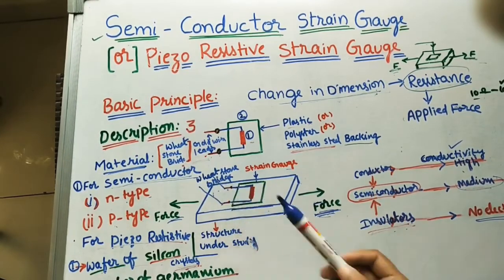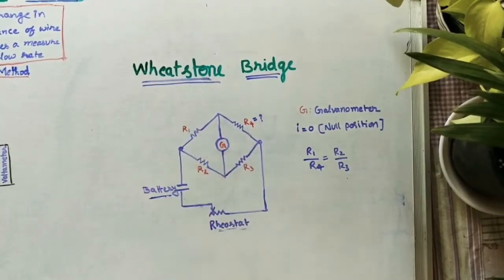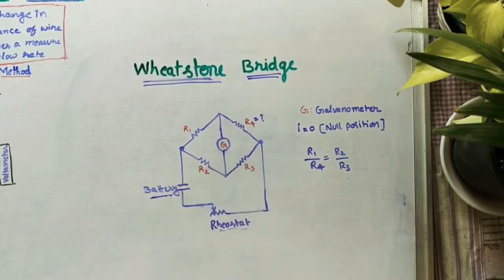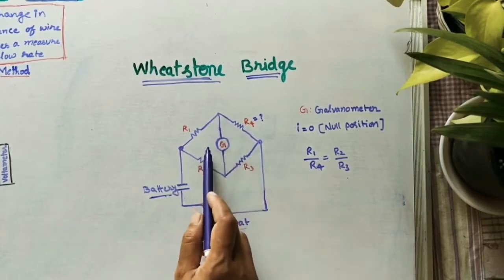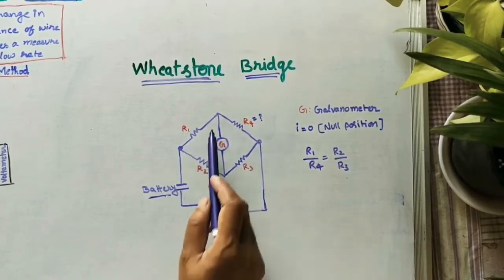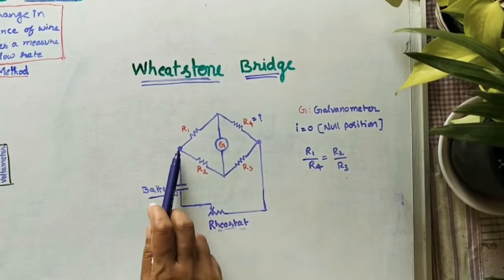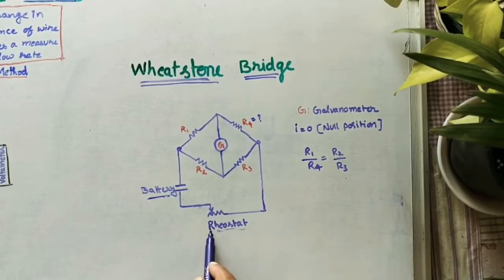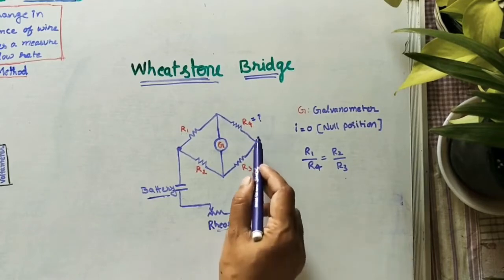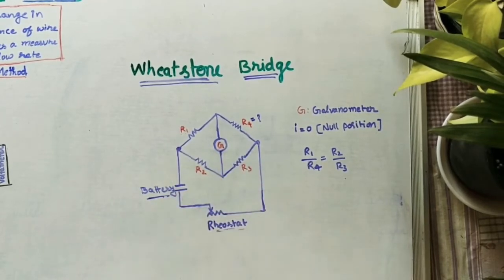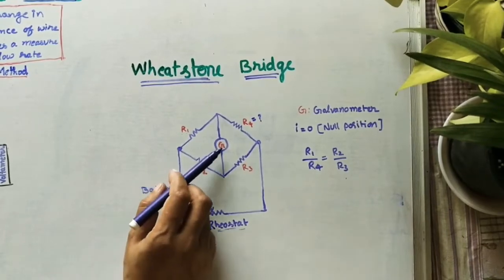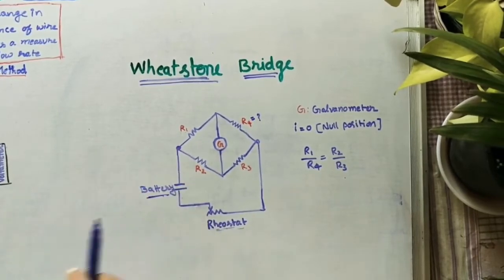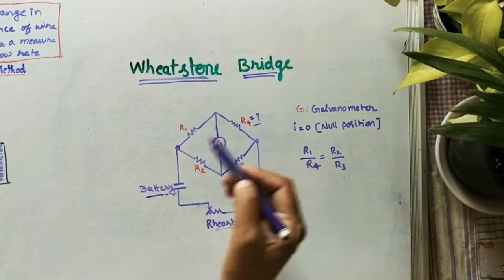Let us see how the Wheatstone bridge works. It has four resistances: R1, R2, R3, R4, arranged symmetrically about horizontal and vertical axes. A battery supplies current to the bridge, and a rheostat controls the amount of current. We know R1, R2, and R3; R4 is unknown and must be found.